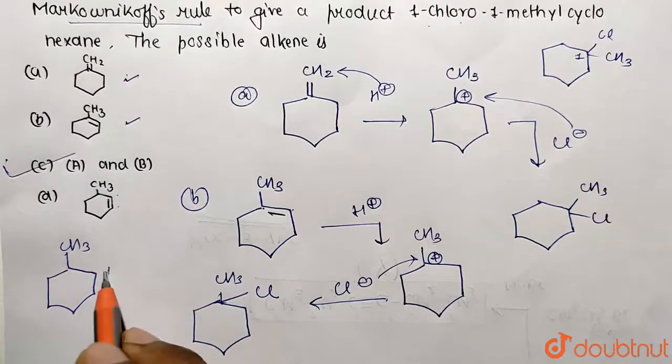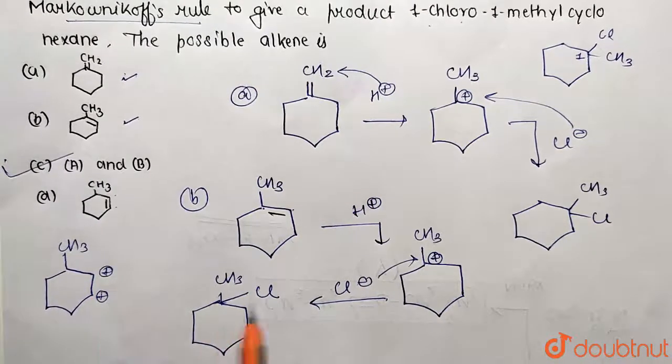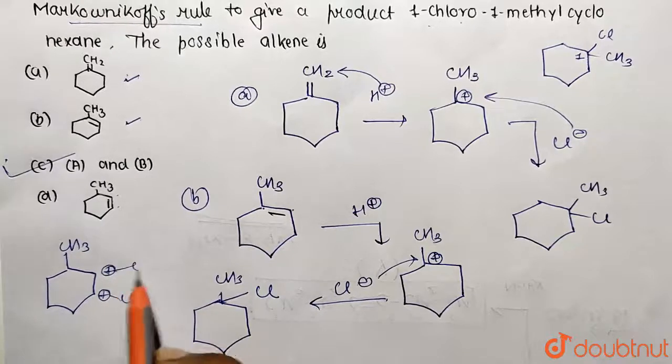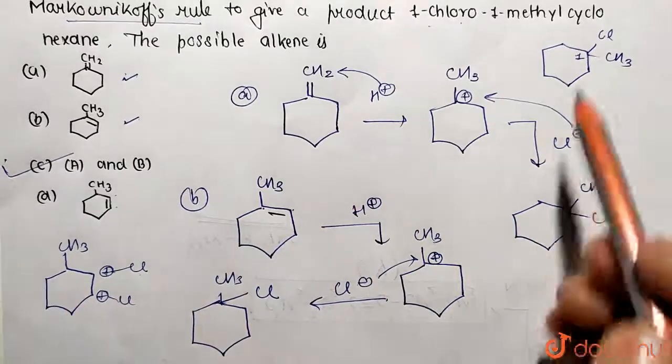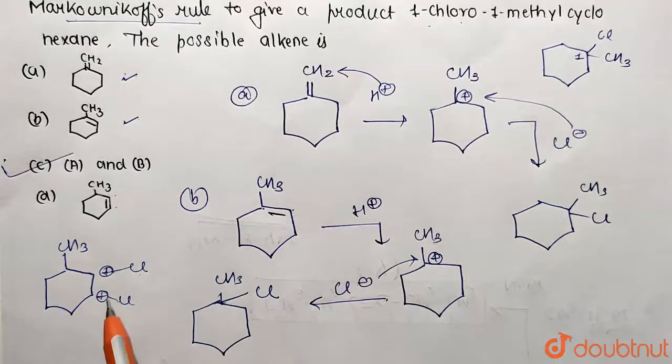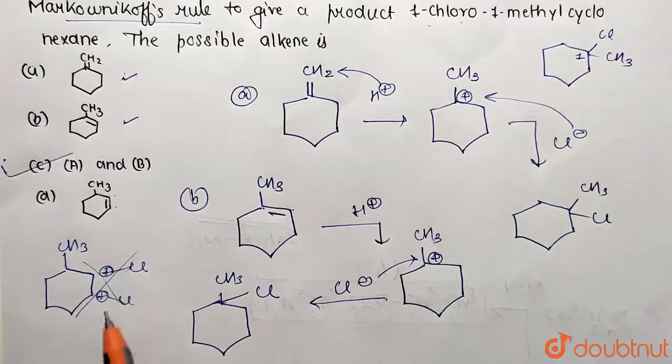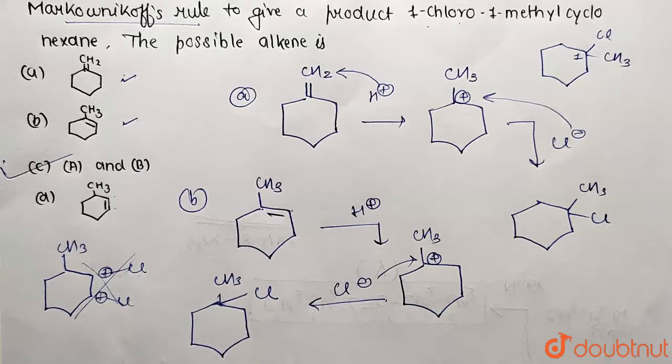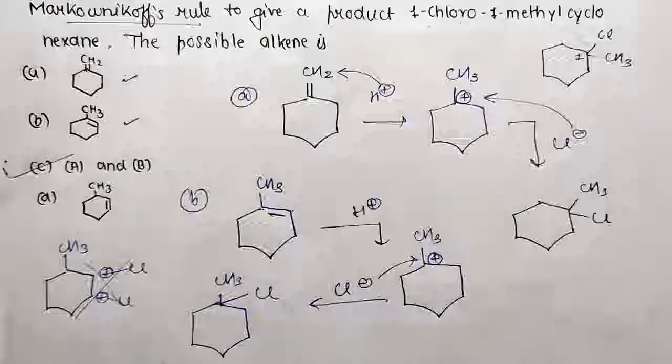Correspondingly, chlorine will be reacting at this position or at this position, so the required product will not be formed. There's no concept of extra shifting taking place, and this normal reaction is not going to work. So Option C is the answer.